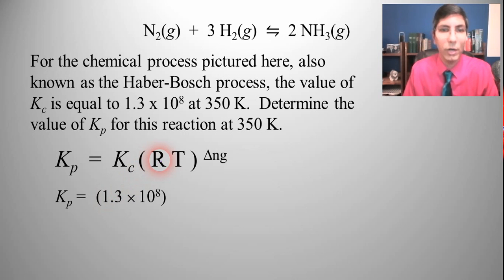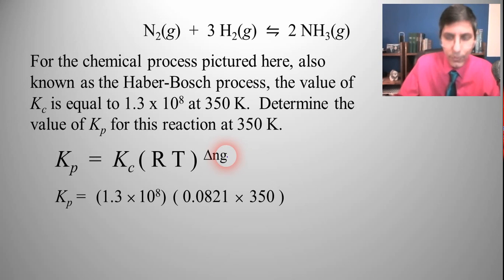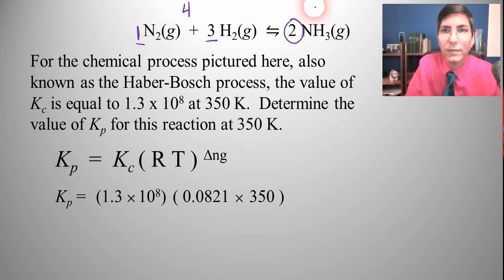R is 0.0821, our universal gas constant. The T is the temperature in kelvins which is 350 kelvins. So that goes in here. Now delta ng, what's the change in number of moles of gas? Well let's look at the equation here. We have one mole of gas right here. We have three moles of gas here. So on the reactant side we have 1 plus 3 which is 4 moles of gas. And on the product side we have only 2 moles of gas. So it goes from 4 to 2. Now from what I'm seeing that's a drop of 2 moles of gas. So that's a change of negative 2.